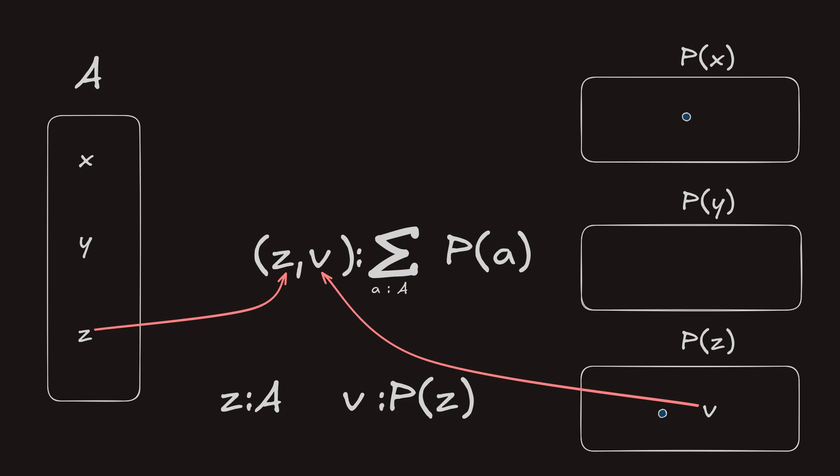The classical analogue of this is there exists an A such that P of A is true. In logic, this is called an existential quantifier.